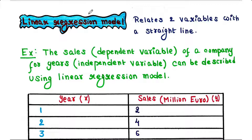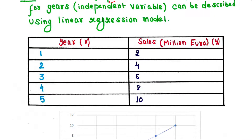In the last regression lecture we saw that in statistics there are two types of variables: one is the independent variable and another is the dependent variable. For example, the sales of a company is the dependent variable whereas time, that is year, is the independent variable. Hence the dependent variable is dependent on the independent variable.